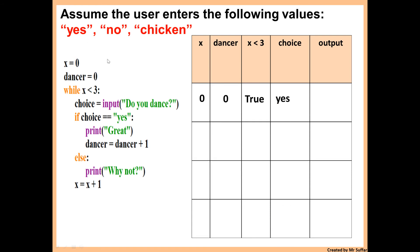Then we go to the if statement: if choice is equal to 'yes' — yes, that's true. So we go inside the if statement. It says print 'great', so we're going to display 'great'. Then it says dancer is equal to dancer plus 1, so we're going to increase dancer by 1. We skip the else because we've already done the if statement. We go to x equals x plus 1 — that's not indented, so it's not inside the if statement, so we have to add 1 to x.